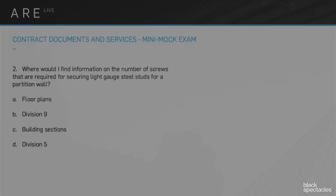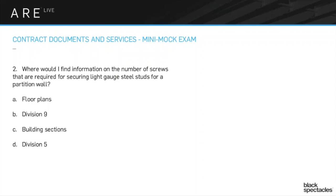Number two is an interesting one. Where would you find information on the number of screws required for securing light gauge steel studs for a partition wall? We have two different types of answers: A and C are floor plans and building sections, talking about the drawing set, and B and D are Division 9 and Division 5, which are CSI divisions found in the specification book, the project manual.